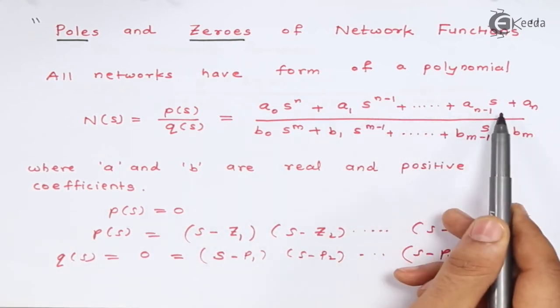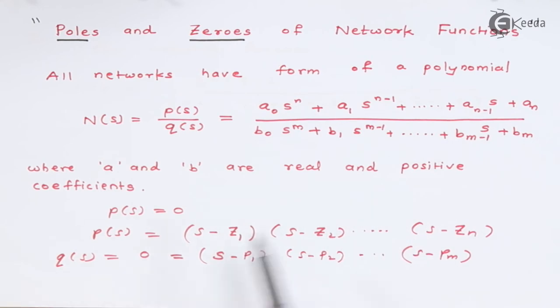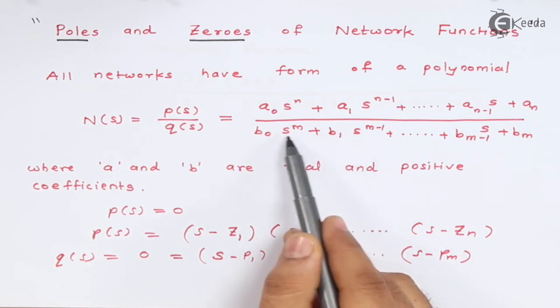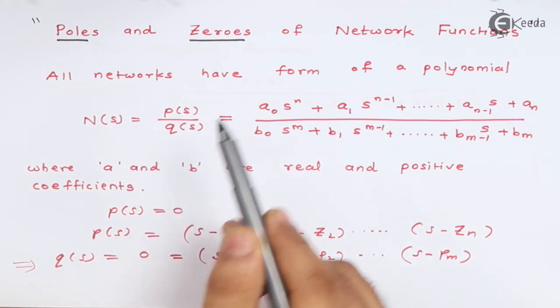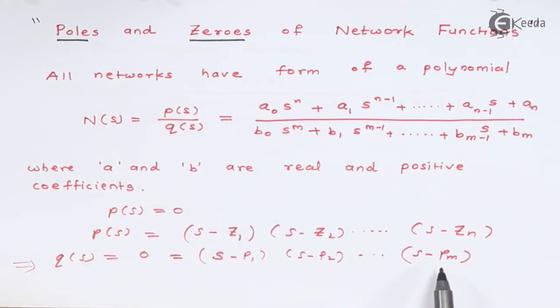So whenever your numerator turns out to be 0, or those values of s or complex frequency s for which your numerator becomes 0 are called as zeros of network because your network falls to 0. And for those values of s which you can see here Q(s), for which this your Q(s) or denominator becomes 0, and when denominator becomes 0 your network function becomes infinite, and for that particular case it is called as poles.